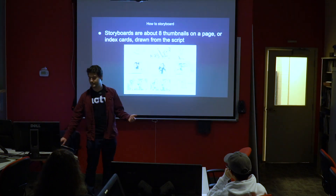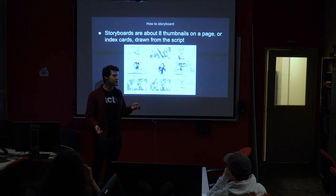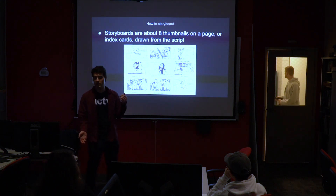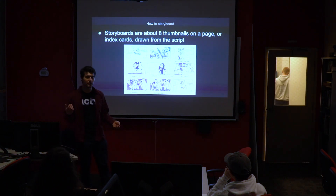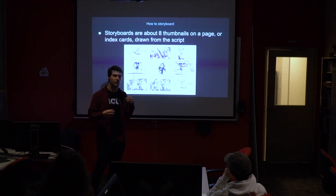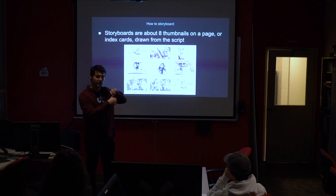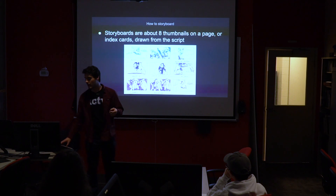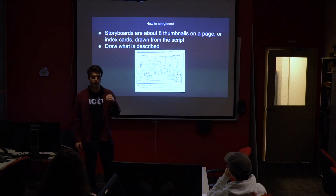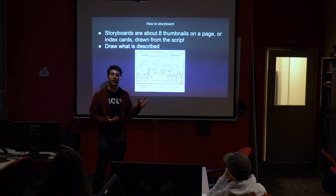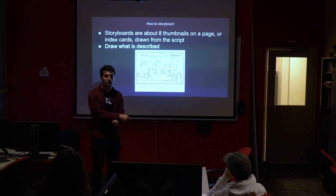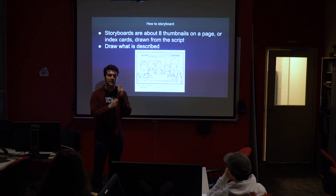So what's in a storyboard? Usually it's about four to eight drawings per page — they can be as small as little tiny thumbnails or as large as entire index cards, and they're drawn from the script. That is probably the most important part of storyboarding: you're taking the screenplay and converting it into a visual format, drawing what is described.